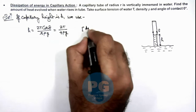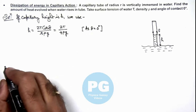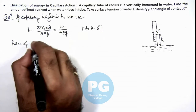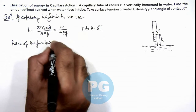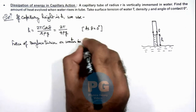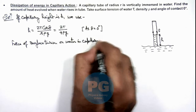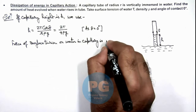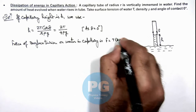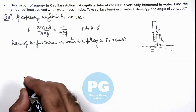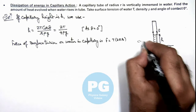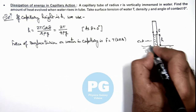With θ equal to zero degrees, we calculate the force of surface tension on the water in the capillary. This force is given as T multiplied by 2πr. When the liquid is lifted up, the center of mass of this liquid will be at a level h by 2.